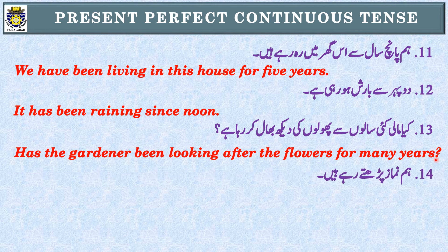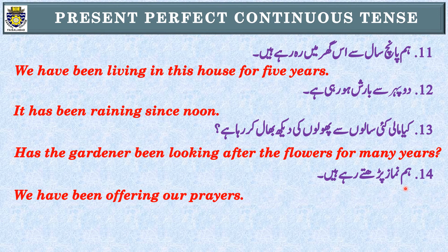Sentence 14: 'ہم نماز پڑھتے رہے ہیں۔' Identification: 'تے رہے ہیں' — Present Perfect Continuous Tense۔ یہاں کوئی وقت یا مدت کا ذکر نہیں ہے، لیکن 'تے رہے ہیں' کی وجہ سے یہ Present Perfect Continuous Tense کا sentence ہے۔ Subject: 'ہم' یعنی we — have been۔ We have been offering our prayers.